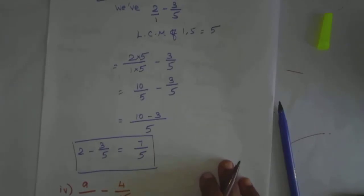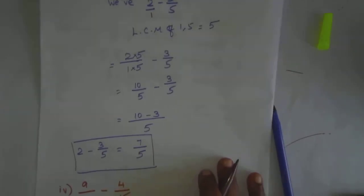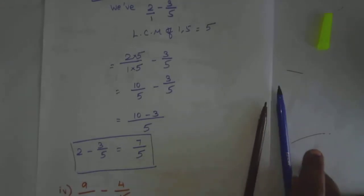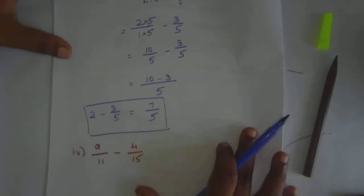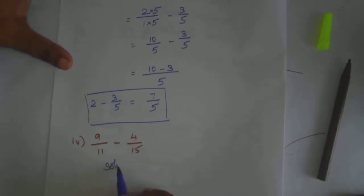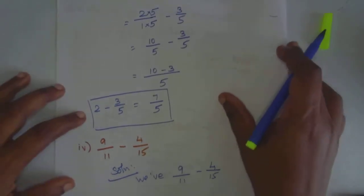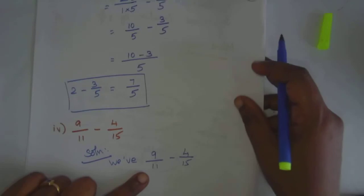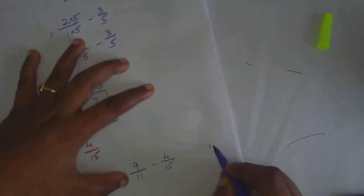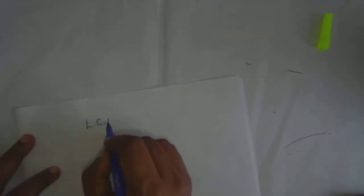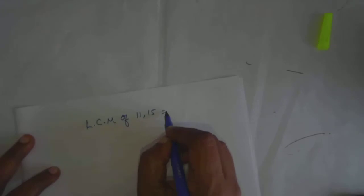In this case, there are two fractions: 9 by 11 minus 4 by 15. Both denominators are different. Solution: we have 9 by 11 minus 4 by 15. Let us take the LCM of the denominators 11 and 15. 11 and 15 are not in the same table, so we multiply 11 and 15. 11 times 15 is 165. LCM of 11 and 15 is equal to 165.